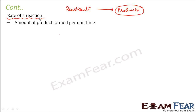Taking the example of curdling of milk again: milk is a colloidal solution composed of biomolecules like fats, proteins, and sugars. When you add vinegar or lemon juice, the pH of the solution changes, causing protein molecules to attract one another, form clumps, and change the milk into curd. This entire process happens due to the change in pH.